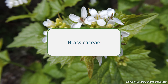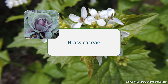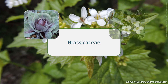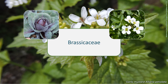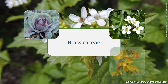Many of our vegetables and greens come from the Brassicaceae, such as cabbage, kale, Brussels sprouts and cauliflower — all varieties of Brassica oleracea — the radish (Raphanus sativus), turnip (Brassica rapa), and watercress (Rorippa nasturtium-aquaticum), as well as ornamentals like stock (Matthiola) and wallflower (Erysimum cheiri).